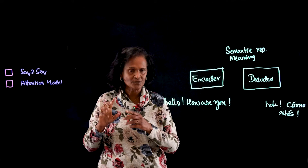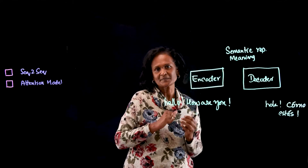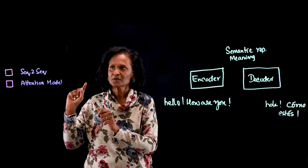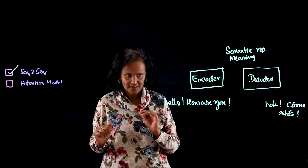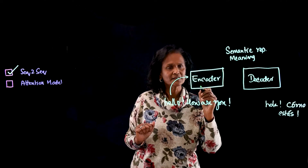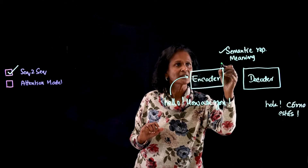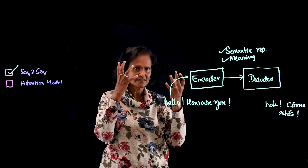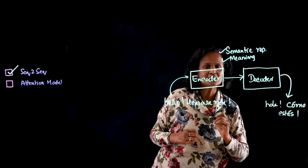The large language models, as you all know, use transformer models, and they have both encoder and decoder capabilities. The large language models typically make use of two approaches in doing the translations. Number one is the sequence-to-sequence approach. In the sequence-to-sequence approach, you take an input text — for example, 'Hello, how are you?' — and feed it to the encoder. The encoder goes through the text and creates the semantic representation of the text, captures the meaning, and passes it on to the decoder. The decoder then translates it to the target language.